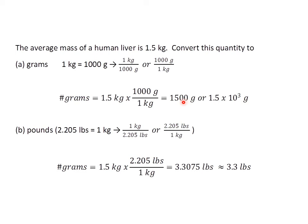These are trailing zeros. They are not terminated by a decimal point, nor do they come after the decimal point, so they're not significant. To avoid confusion, I've reported this in scientific notation to two sig figs: 1.5 times 10 to the third grams. Remember, you can't use conversion factors to determine the proper number of sig figs in which to report your answer.